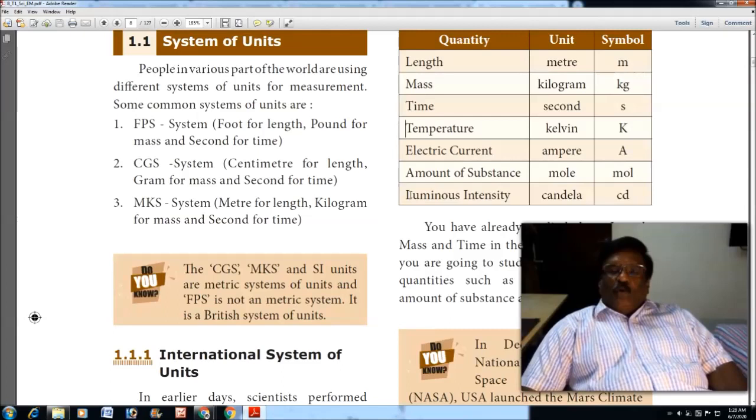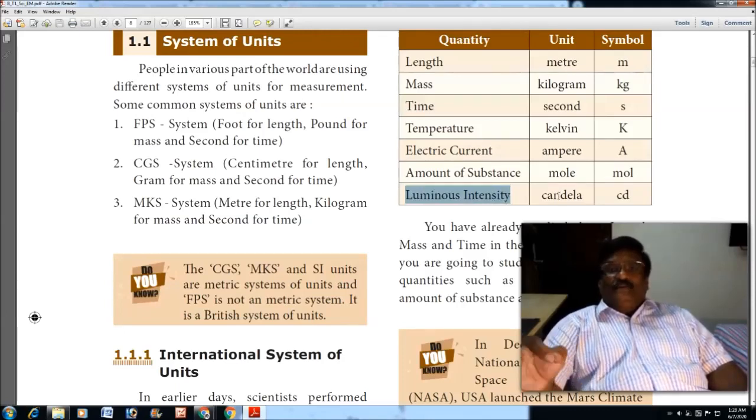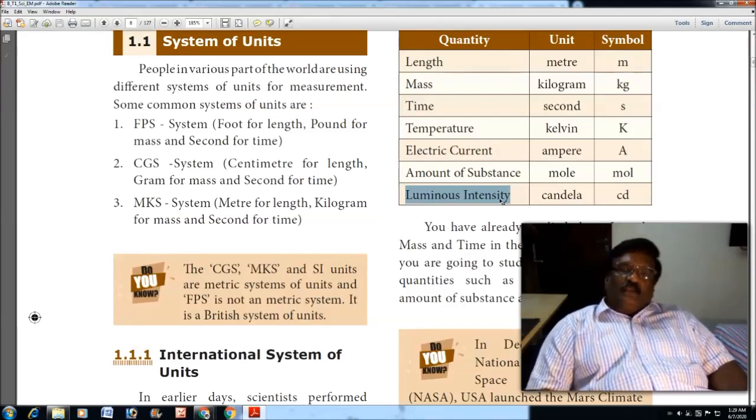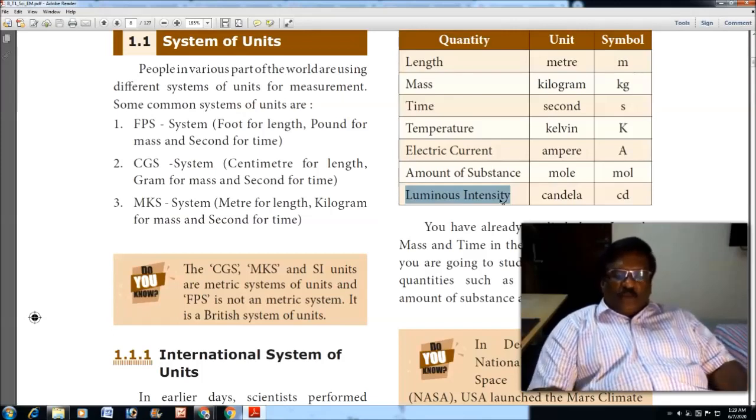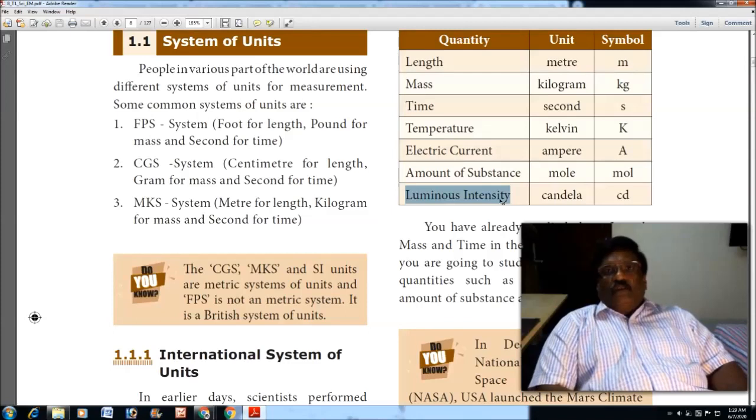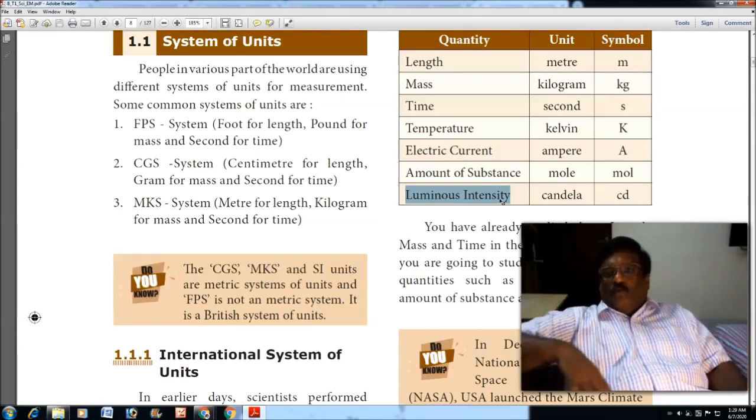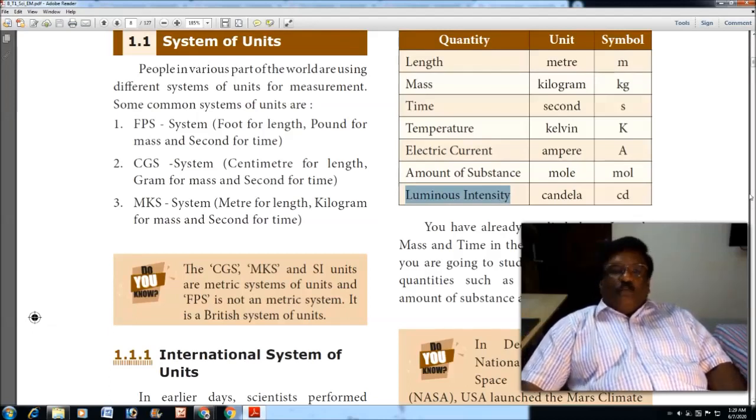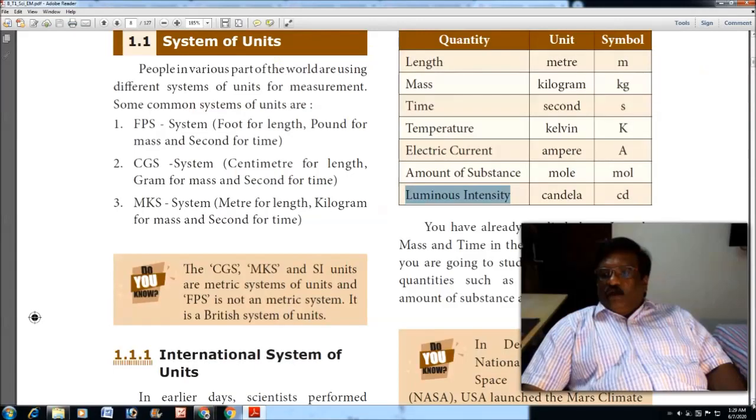Luminous intensity is measured in a unit called candela. How bright is a light? It is a comparative value. For example, comparing different sources of light. So it is a comparative value only. Luminous intensity is measured with the unit called candela. This is about the International System of Units, and this table we already discussed in seventh standard.